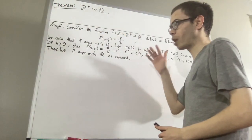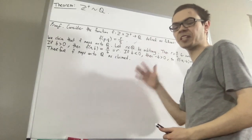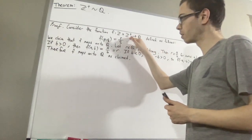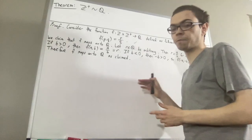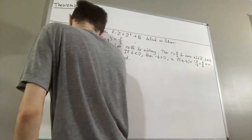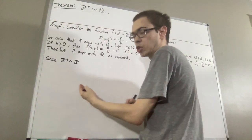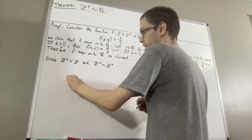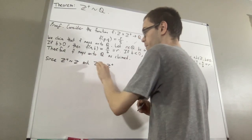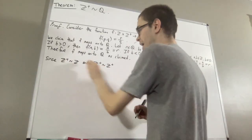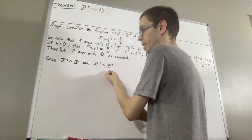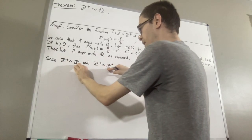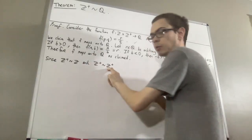Now we use properties of bijections and the integers to show there exists a bijection from the set of positive integers to the domain set ℤ×ℤ⁺. There is a bijection from ℤ⁺ to ℤ, and a bijection from ℤ⁺ to ℤ⁺. Using the property that bijections from A to B and C to D give a bijection from A×C to B×D, we get a bijection from ℤ⁺×ℤ⁺ to ℤ×ℤ⁺.